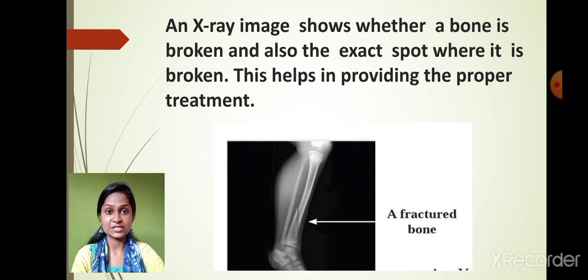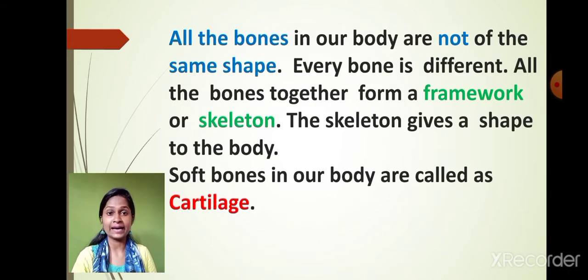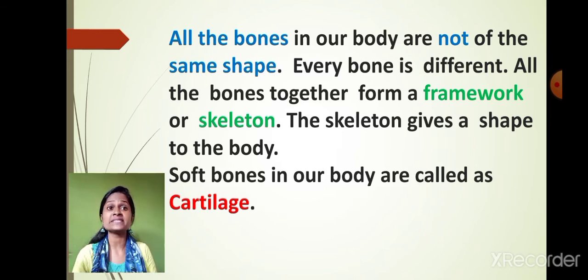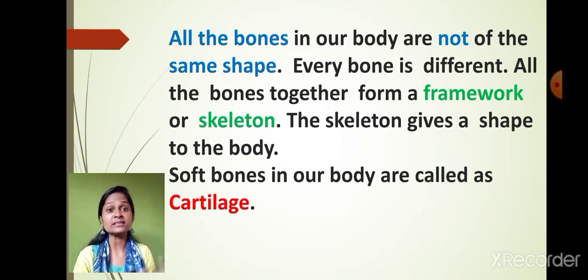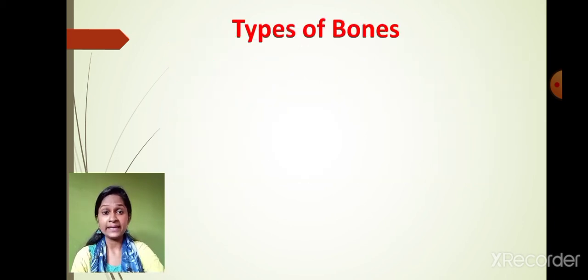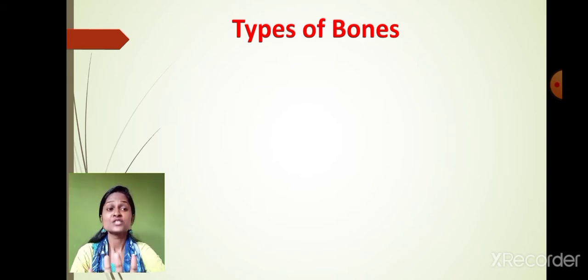That is what we learned in the last lecture. We also learned that there are many types of bones present in our body, all of different shapes. Every bone is different and gives our body its proper shape and support. The soft bone present in our body is called cartilage. Depending upon the shape of the bone, we classify bones into four types.